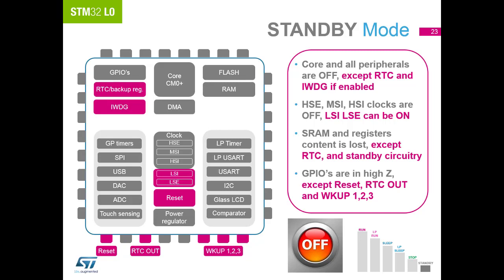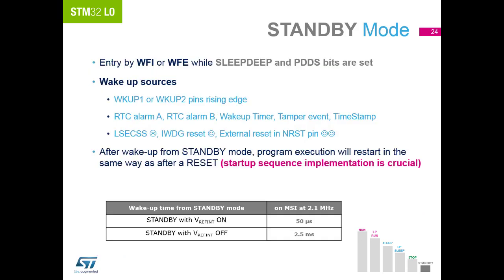Finally we have standby mode. This is the lowest power mode as it shuts down the core, all the peripherals and the SRAM. The only peripherals that can be left running are the RTC and the independent watchdog if enabled beforehand. Entry is controlled by the same two instructions, but this time with the deep sleep and power down options enabled within the Cortex core. Exit from standby mode is via the dedicated wake-up pins, the RTC, or the independent watchdog if enabled. As the SRAM has been down powered, the code will restart execution from the very beginning.